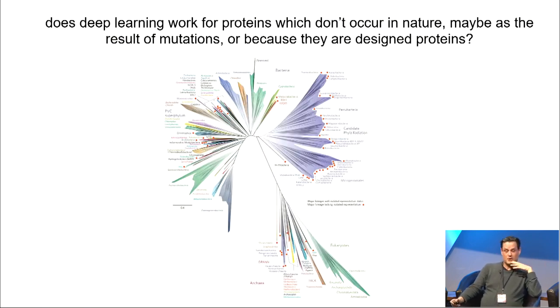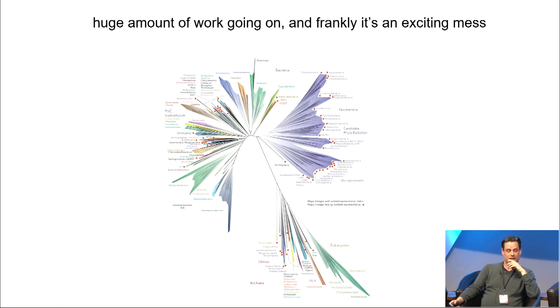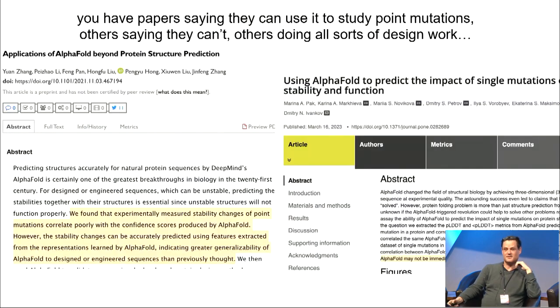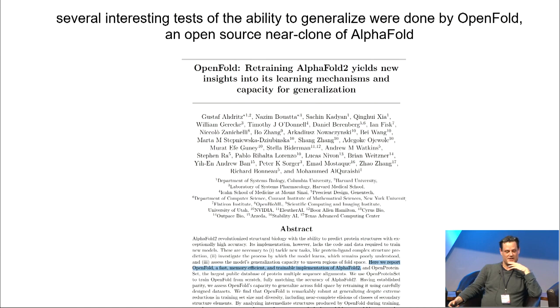But of course, you'd ask, does deep learning work for proteins which don't occur in nature? Maybe it's the result of mutations, or because they're designed proteins, or there could be many other reasons. And I can't summarize that work today. It would take hours. There is a huge amount of work going on, and really, it's a mess. It's very easy, actually, just to find juxtapositions of papers that apparently come to opposite conclusions. Papers saying that you can use it to see point mutations, others saying that they can't, others doing all sorts of design work. It's very interesting.